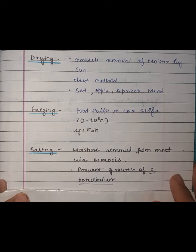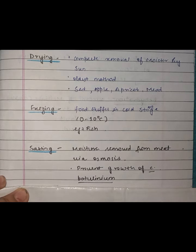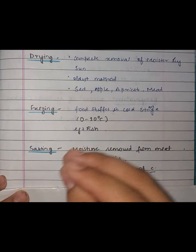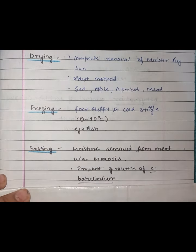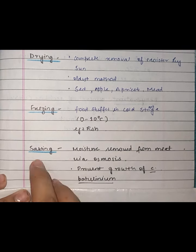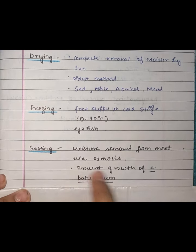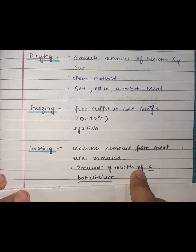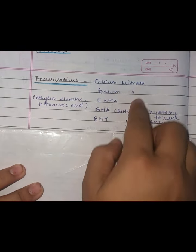In salting, moisture is removed from meat via osmosis. When we add salt, the water comes out through osmosis and the food becomes dehydrated, which prevents microbial growth — especially inhibiting Clostridium botulinum.